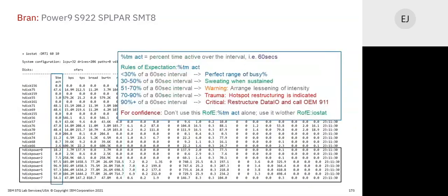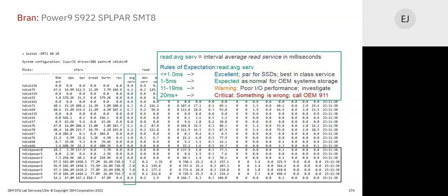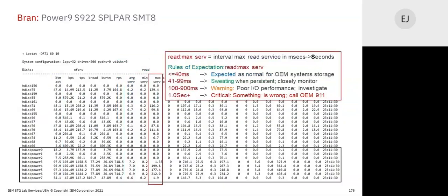That there is busyness — percent time active in 60 seconds. The average service time for reads: if you're SSDs you're probably going to be less than 1.0 millisecond average. Read max service — the longest read serve time that occurred in the last 60 seconds — different set of standards: less than 40 milliseconds expected. If you see a capital S, that really means seconds. I kid you not — twice in my career I found a capital M there for a full minute, and three months ago I found a capital H for an hour.